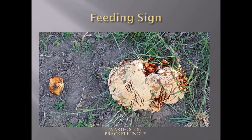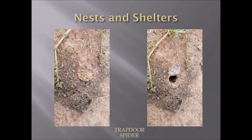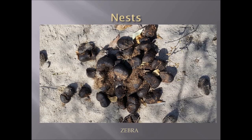Here we have feeding marks on bracket fungus from a water creature. This is a trapdoor spider — open and closed — you can see it makes a silk trapdoor with debris in it; when something approaches it will flip up the trapdoor and capture it. Here we have zebra scat, which can be similar to warthog except zebra scat has a kidney shape with a central crease in the middle, also similar to other equines like horses.